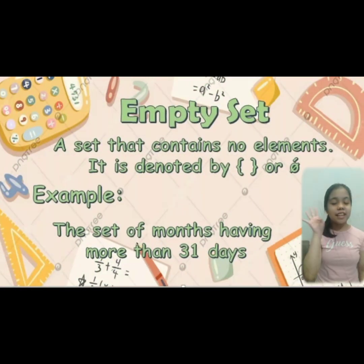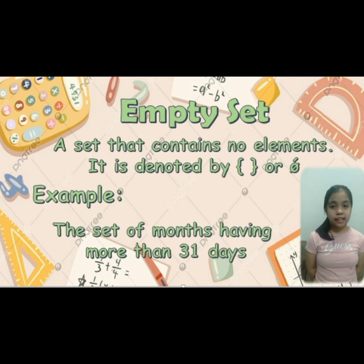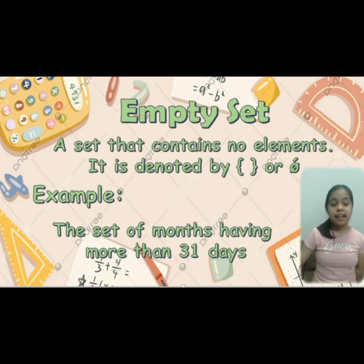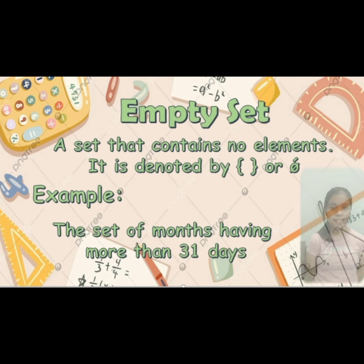The fourth type of set is the empty set — a set that contains no element. It is denoted by a special symbol as you can see on the slide. For example, the set of months having more than 31 days.